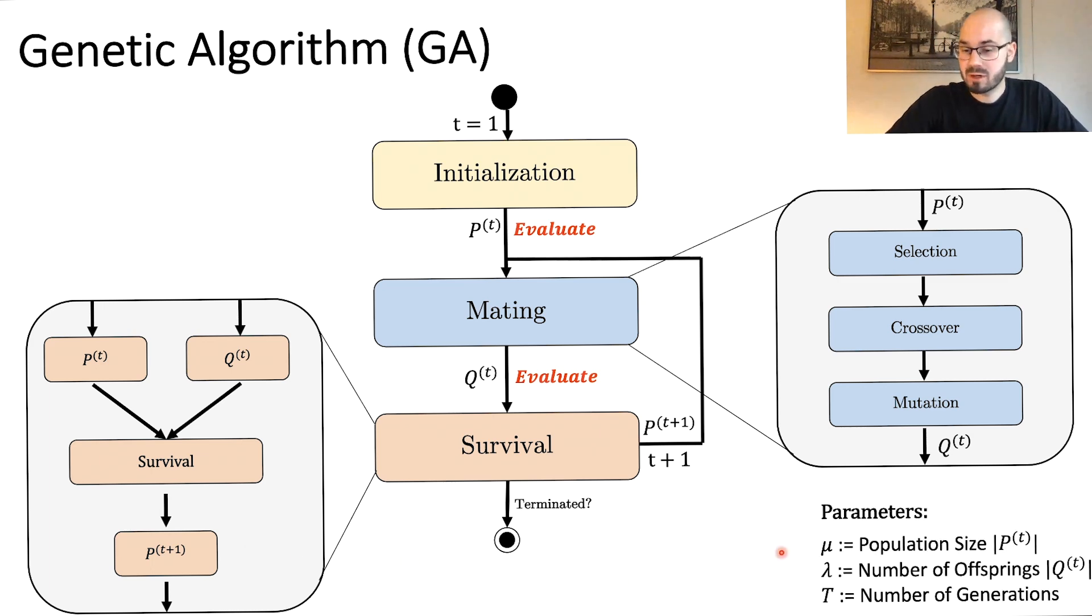There's three parameters which are worth explaining. So we have the population size, which means what's the number of solutions we keep in p of t. Then we have lambda, which is the size of q of t, which means how many individuals are produced by the mating. And then we have t, which is how many iterations we are running the algorithm. So now next I'm gonna explain all of these steps in a lot more detail using the example from before to show you the intuition behind these steps.